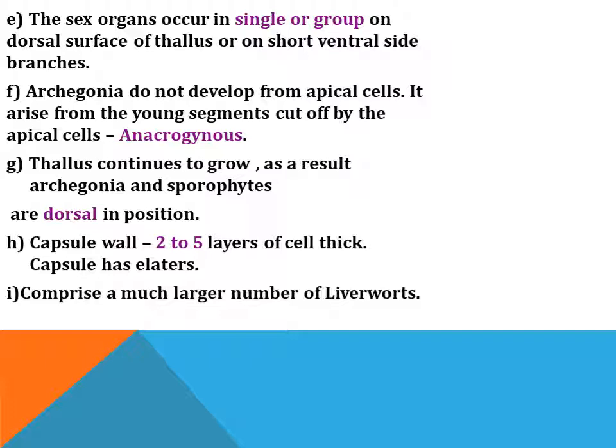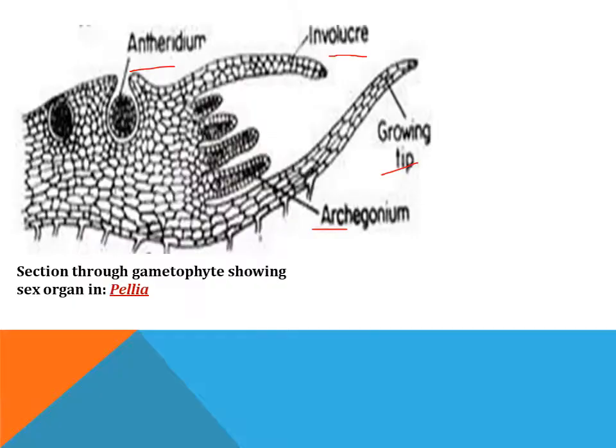The capsule wall is two to five layers of cells thick; the capsule has elators and comprises a much larger number of spores. A cross-section through the gametophyte shows the sex organs in Pellia: the archegonium (female sex organ) and antheridium (male sex organ), the involucre as the protective covering, and the growing tip.